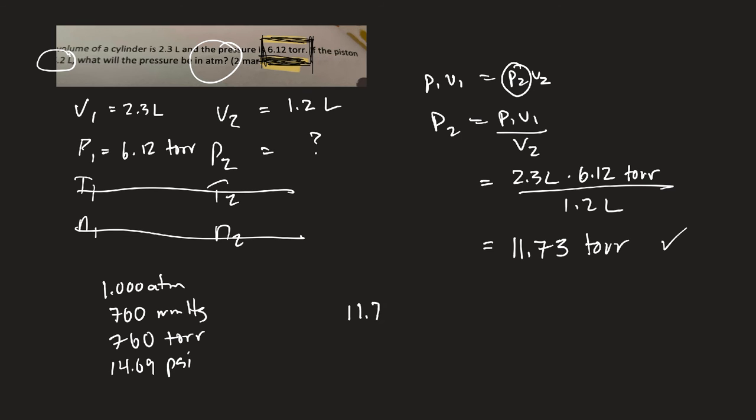So I write down what I'm given, 11.73 torr, and I multiply by a ratio using these numbers there.